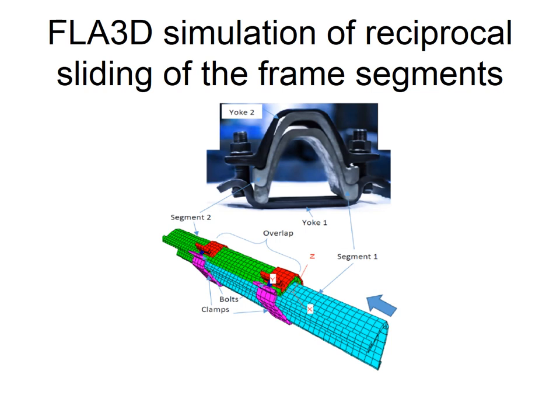We simulated reciprocal slider of the overlapped frame segments squeezed by two clamps using FLAG 3D commercial code with two segments and two clamps. Front end of the first segment was fixed whereas rear end of the second one slipped to 40 centimeters.